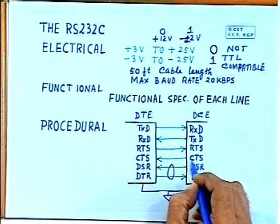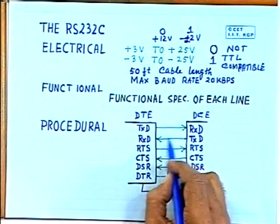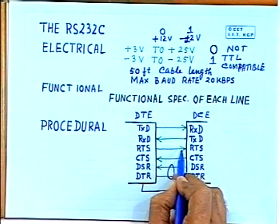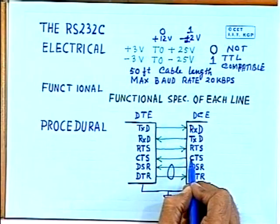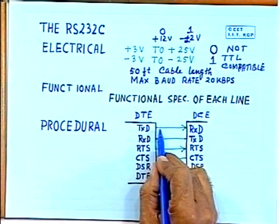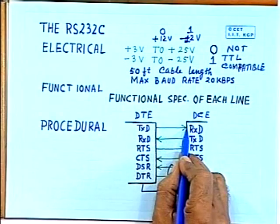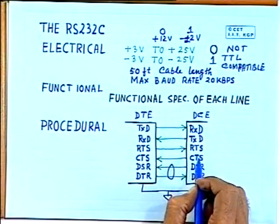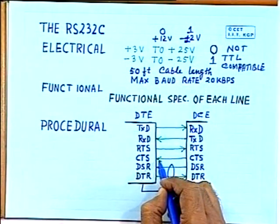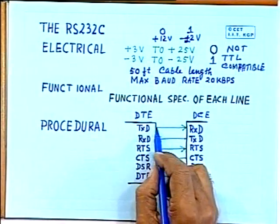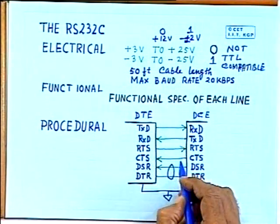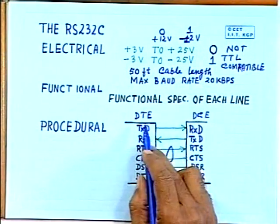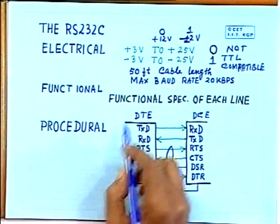RTS and CTS are used for handshaking and data transfer. The DTE sends a request to send (RTS) to the DCE, and only when clear to send (CTS) comes back does it send one character of data. Then again it sends RTS, waits for CTS, and sends another character. This is how these line pairs are used for handshaking of data transfer between DTE and DCE — this is the procedural part.